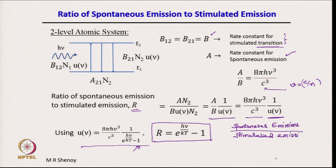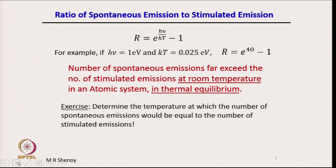Putting in numbers: r = e^(hν/kT) − 1. For example, if hν = 1 eV, corresponding to a wavelength of 1.24 micrometers in the near infrared, and kT ≈ 0.025 eV at room temperature, then hν/kT = 40. Therefore r = e^40 − 1, which is a very large number.